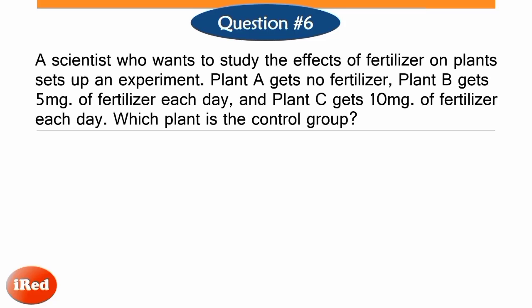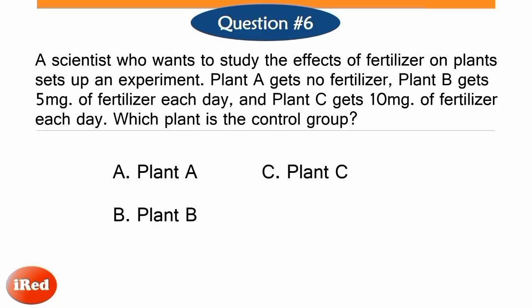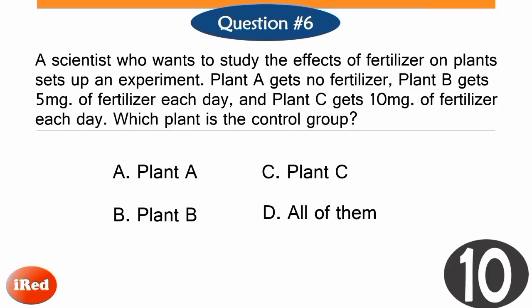Number 6. A scientist who wants to study the effects of fertilizer on plants sets up an experiment. Plant A gets no fertilizer, plant B gets 5 mg of fertilizer each day, and plant C gets 10 mg of fertilizer each day. Which plant is the control group? Letter A, plant A. Letter B, plant B. Letter C, plant C. Or letter D, all of them.